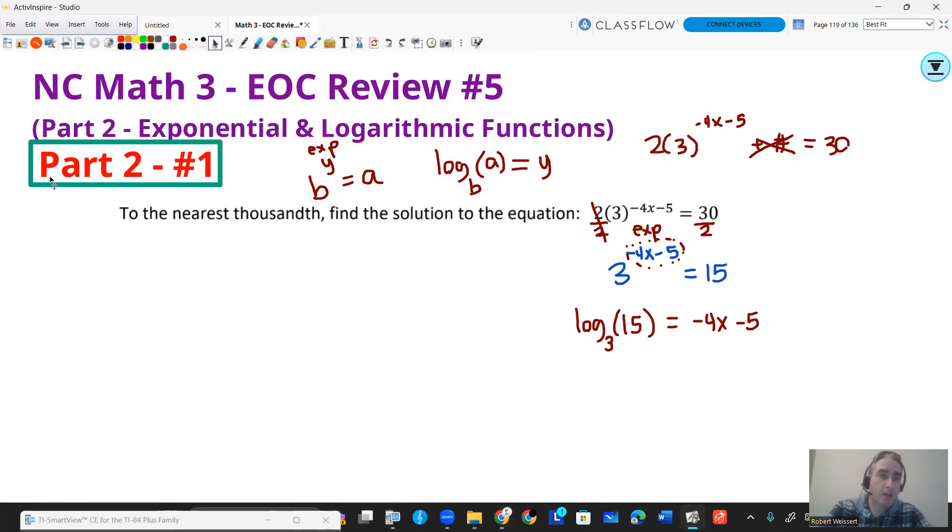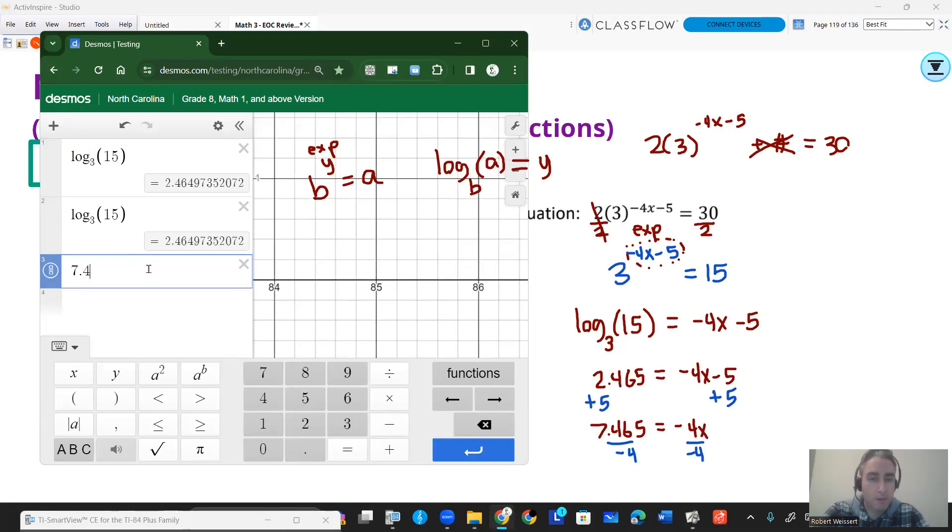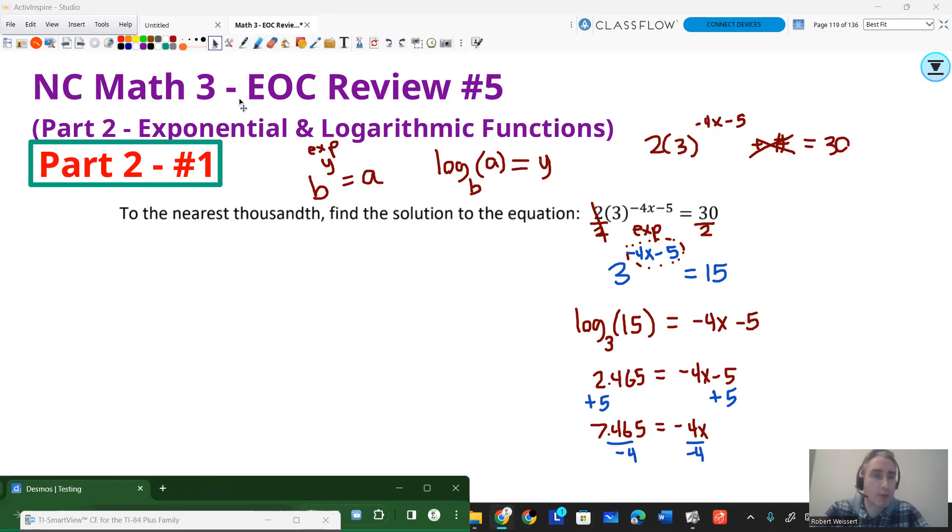From there, we're going to go ahead and solve that out. So 2.465 = -4x - 5. From there it's a linear equation, just be careful with your decimals. We're going to add 5 to both sides and then divide by -4. So 2 plus 5 is 7, so it's going to be 7.465. And I do not know what 7.465 divided by -4 is, I know it's going to be negative. Throw that into your calculator and get your answer and round a couple decimal places. So my answer should be -1.866.